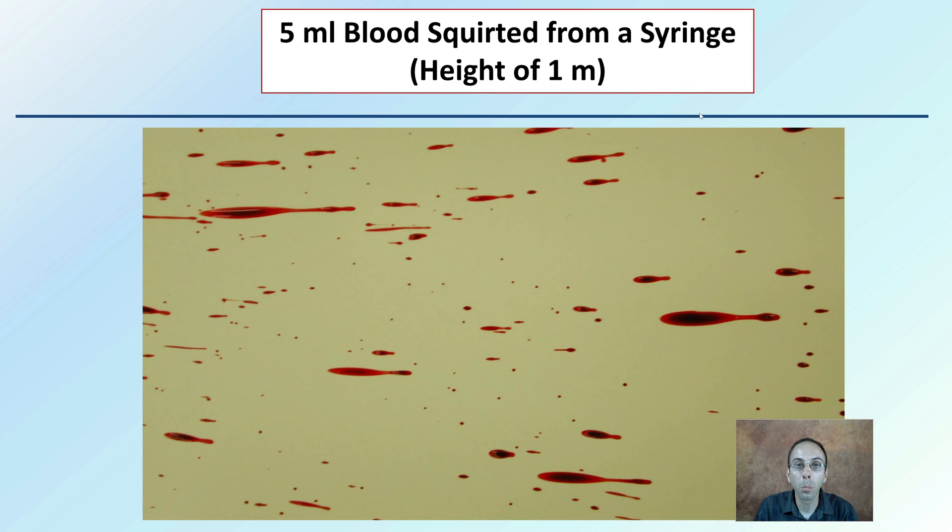Here's 5 ml blood squirted from a syringe at a height of 1 meter. The point here is trying to give you an idea of what those droplets may look like when you zoom in and look at them in a closed space, and how important it is to be able to determine the direction and also potentially the angle of impact.